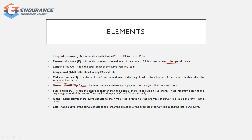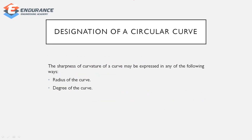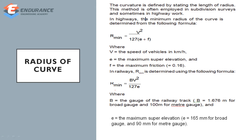The normal curve connects two successive regular curves. The normal curve marks the beginning and end of the curve. If you look at the right-hand curve, the curve goes in the right direction; a left-hand curve goes in the left direction. For a circular curve, the sharpness depends on the radius of the curve. The radius formula is R equals V squared divided by 127 into (E plus F).